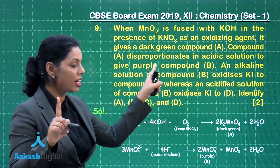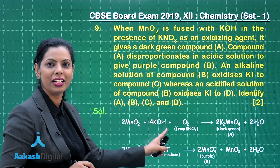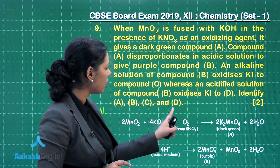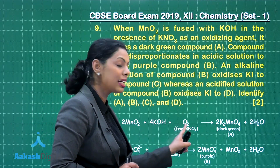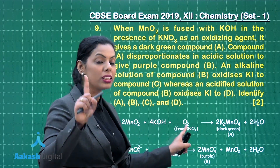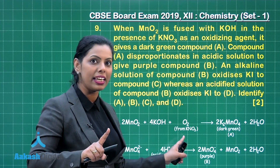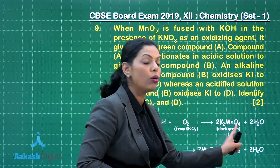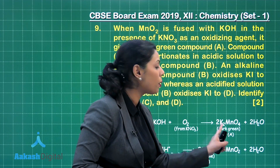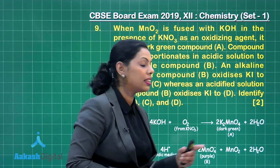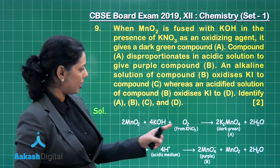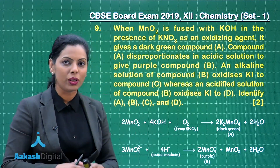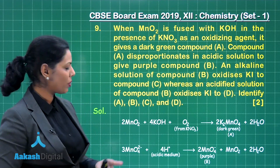It is a two-marker question, so for identification of each compound you would get half a mark. This is a question from D-block elements. For the first step where MnO₂ is fused with KOH in the presence of KNO₃ as an oxidizing agent giving dark green compound A — the reaction is clearly mentioned here.